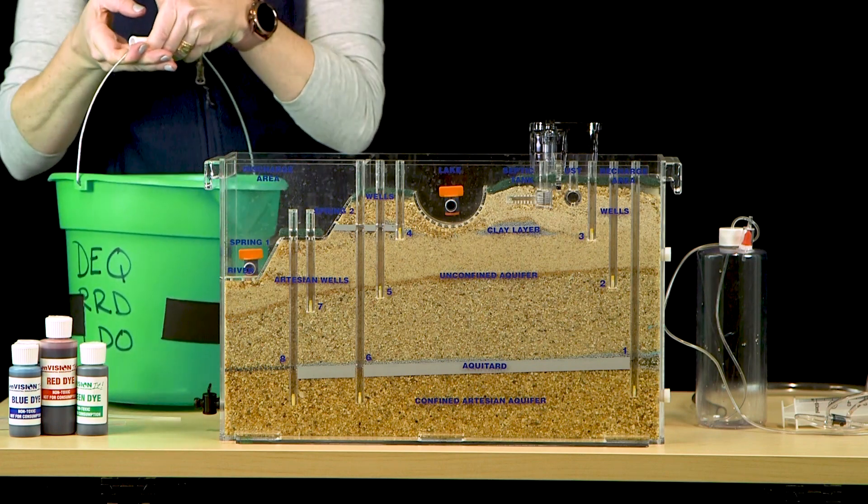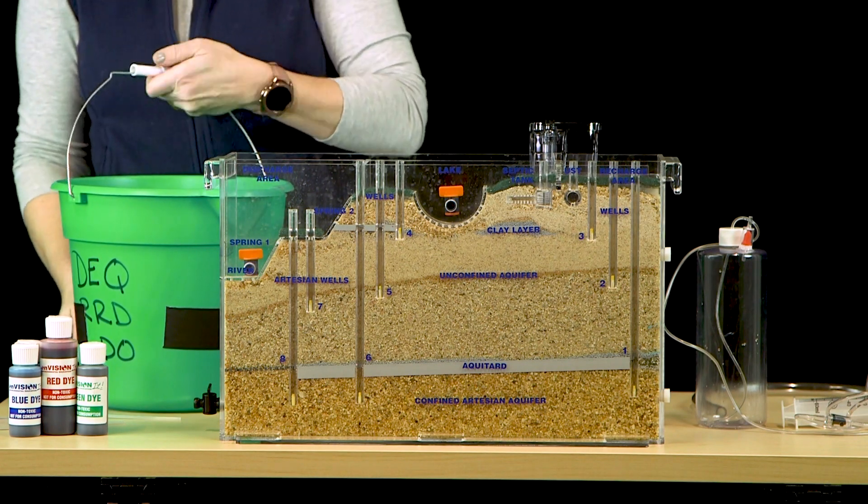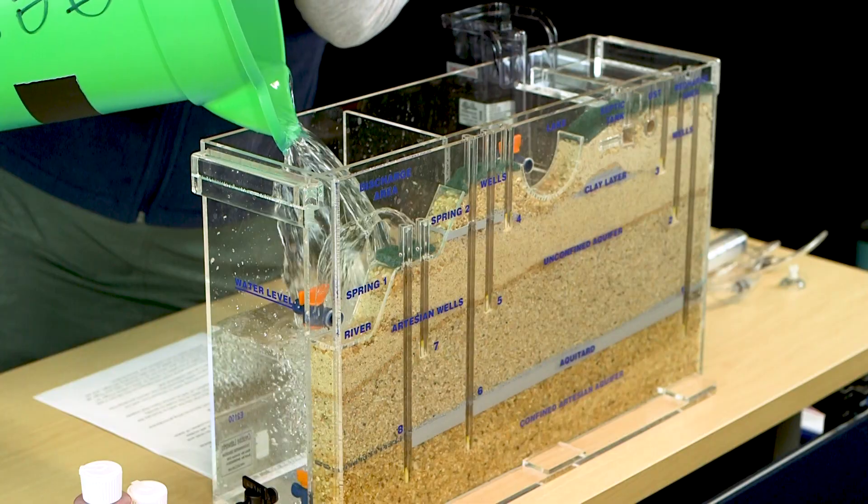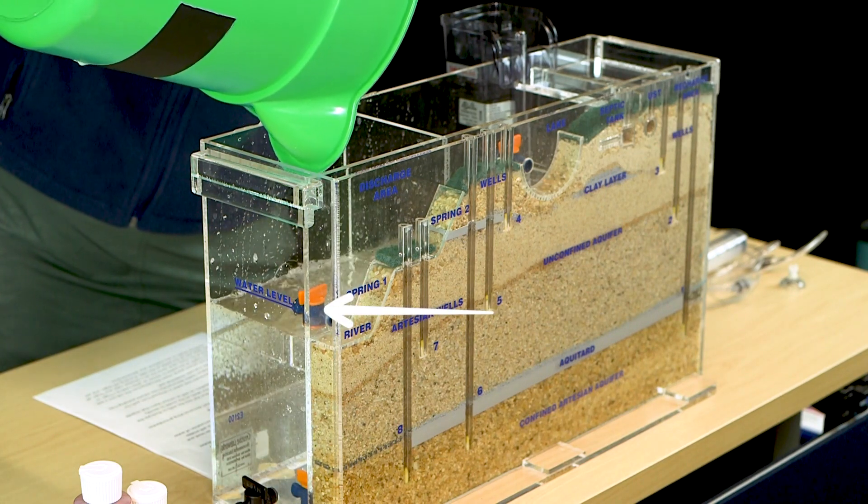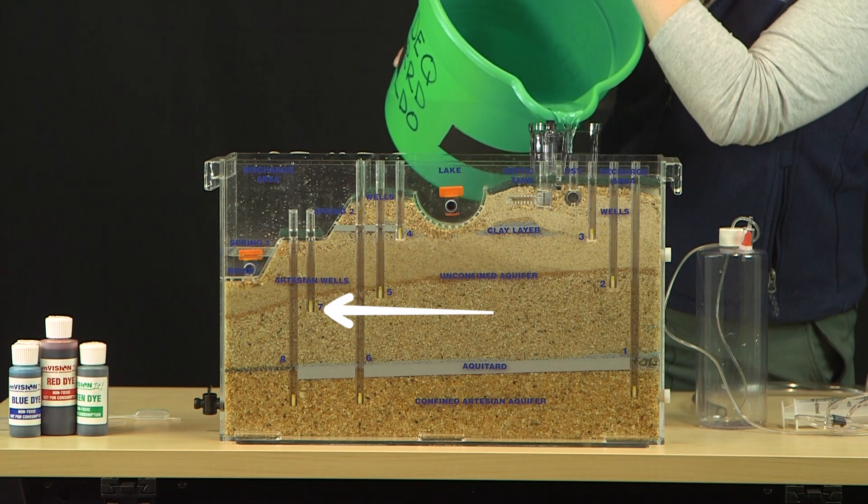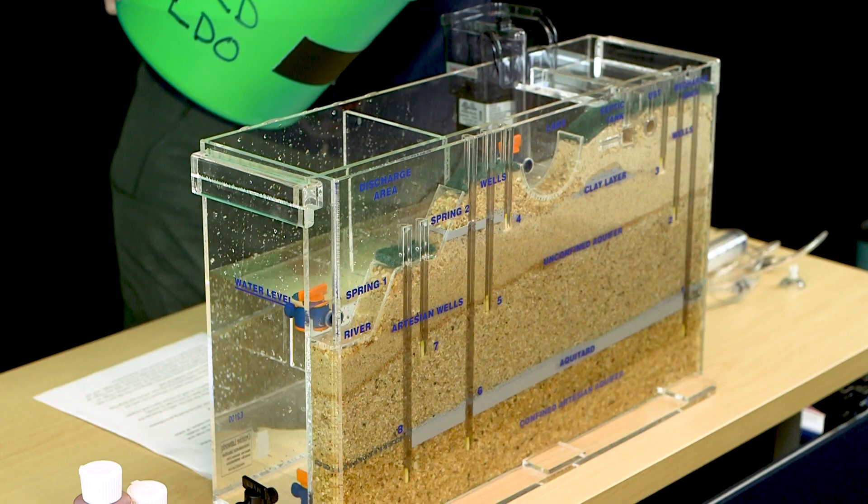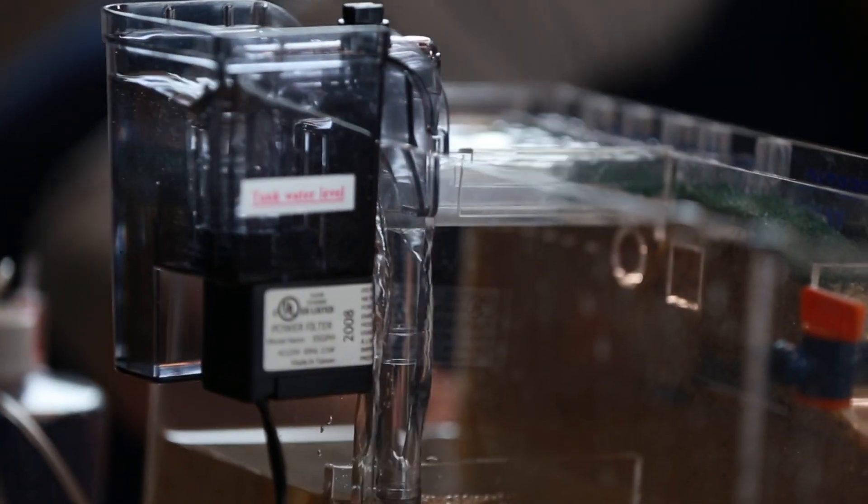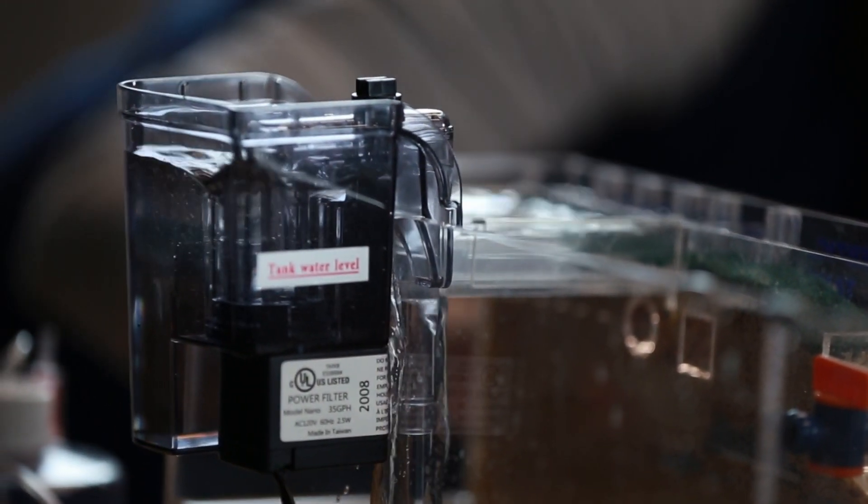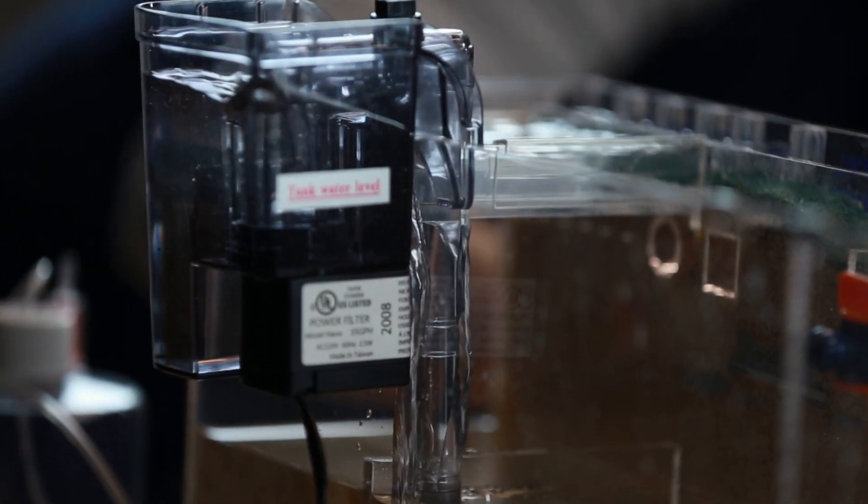Ensuring that the outside drain valve is closed, begin filling the water reservoir to the fill line located on the side of the model. Always prime the pump with water before plugging it in to protect the pump from burnout. It will take a few seconds to begin flowing but should be drawing water from the reservoir and flowing onto the recharge platform.